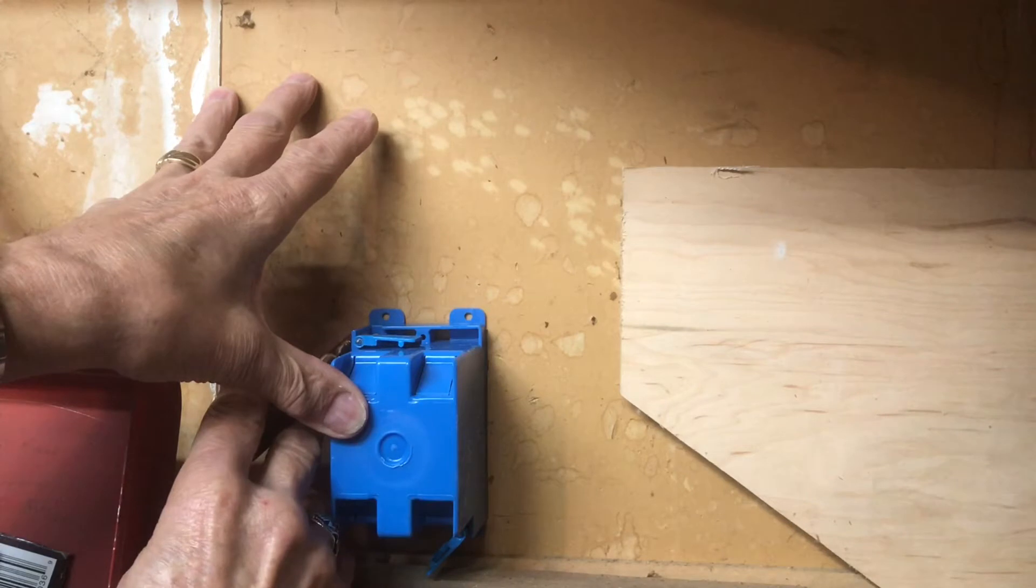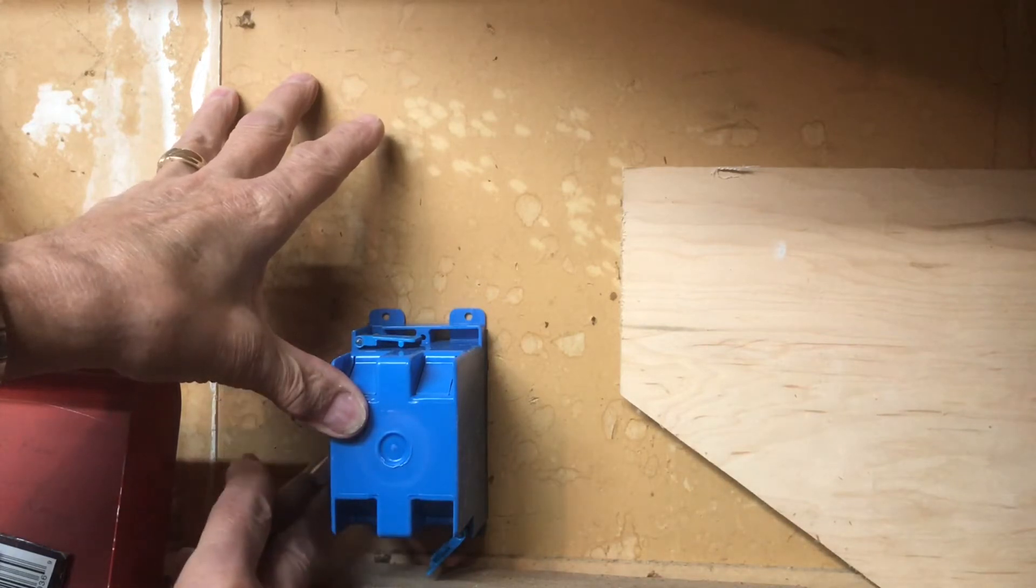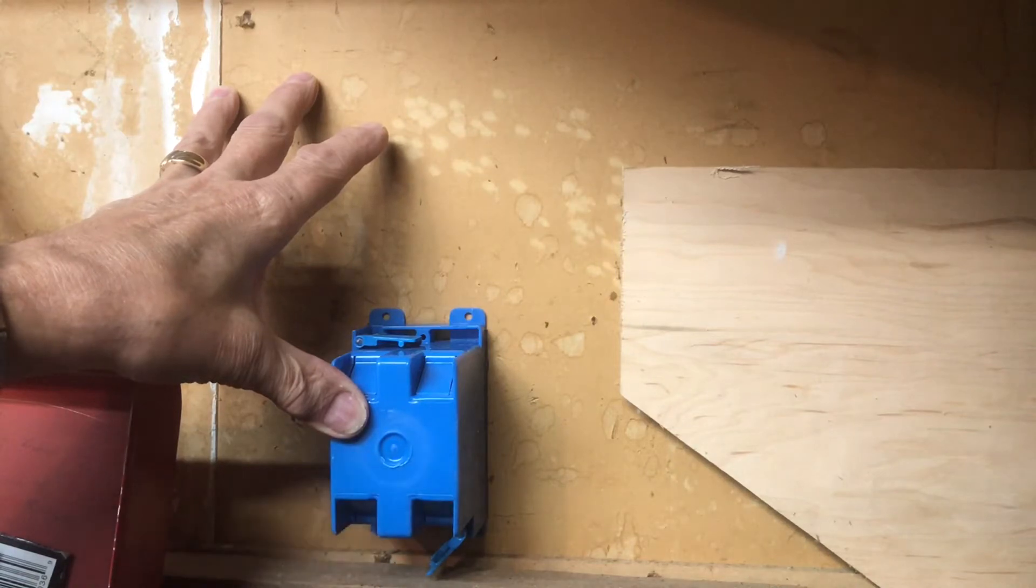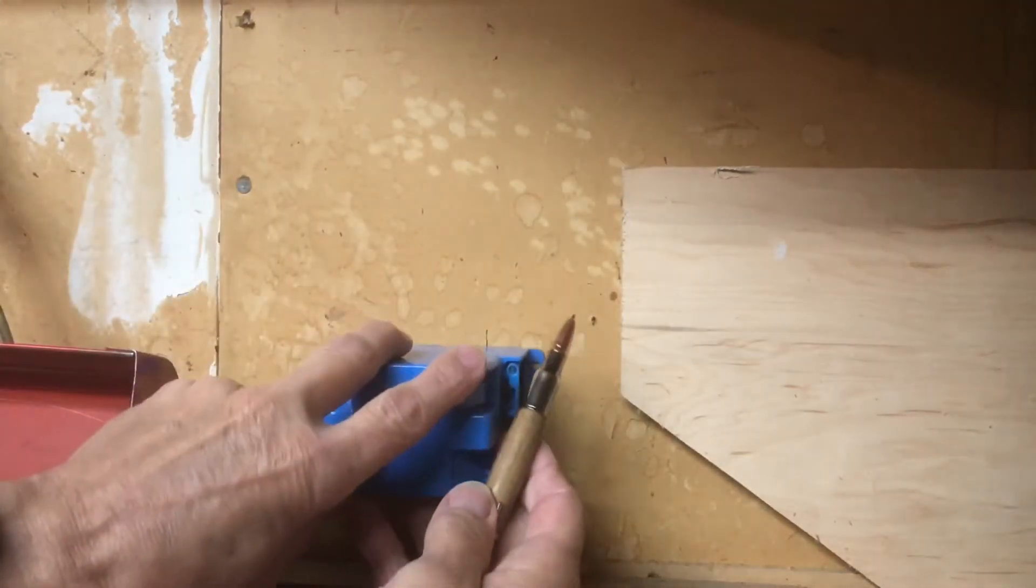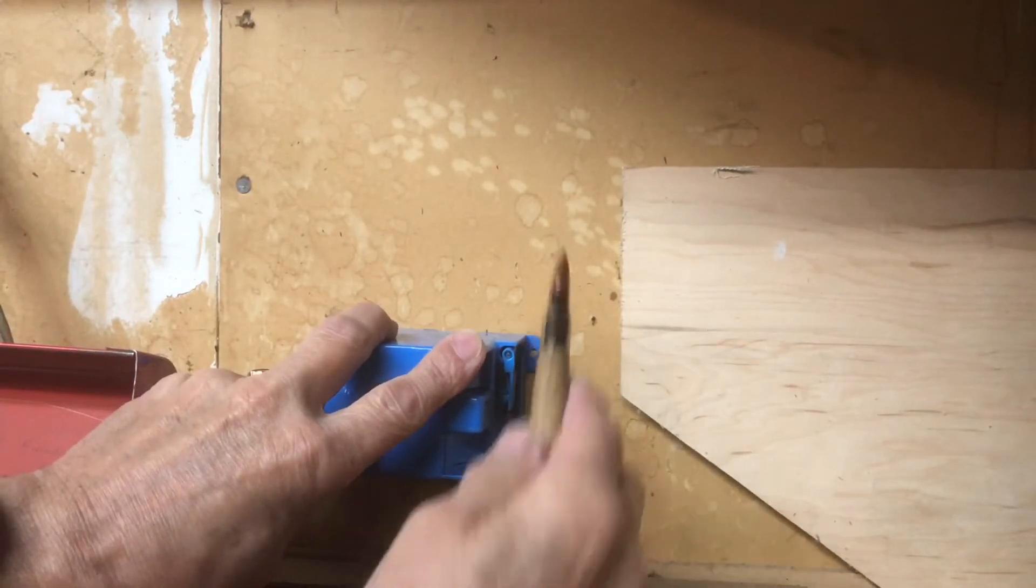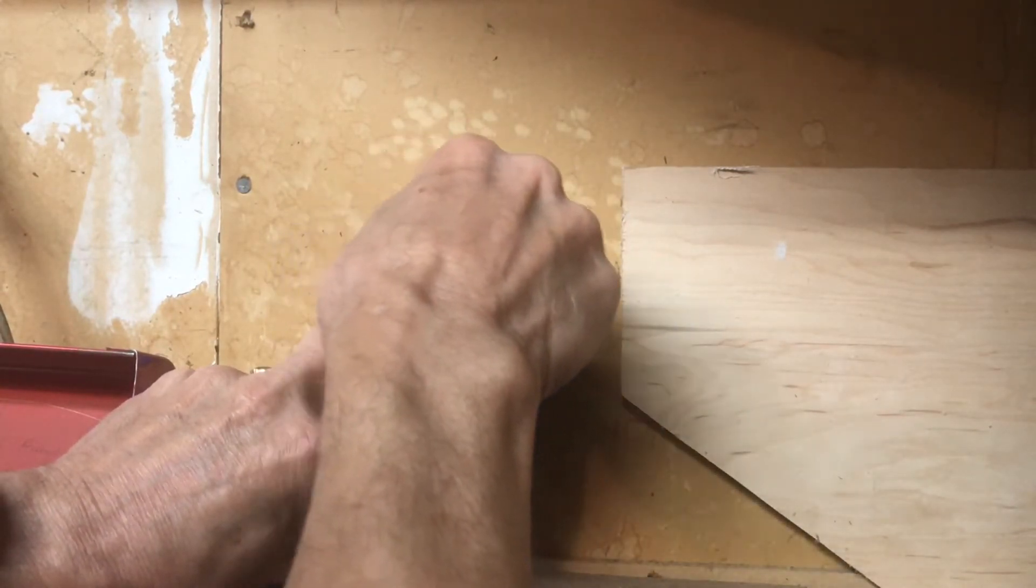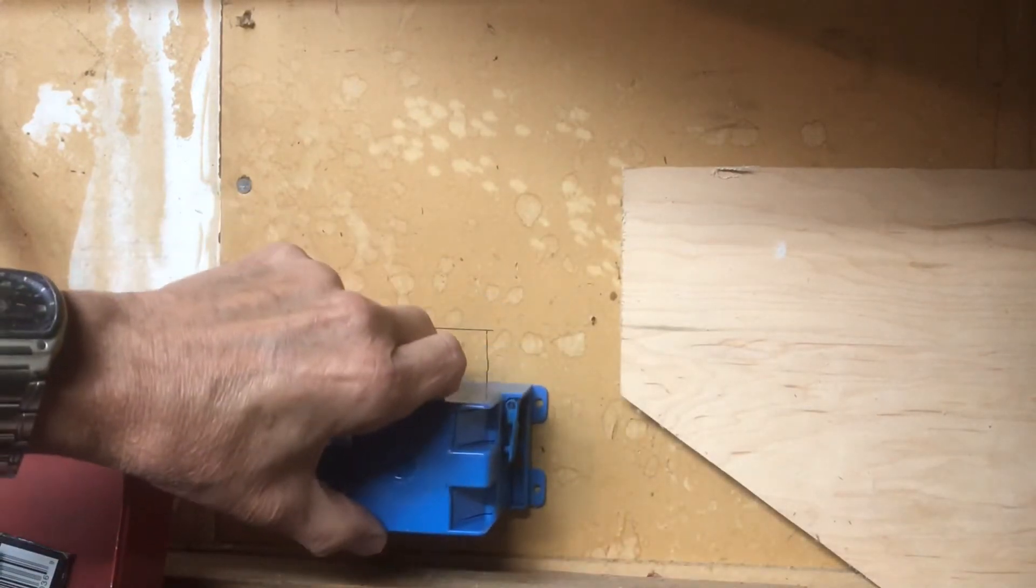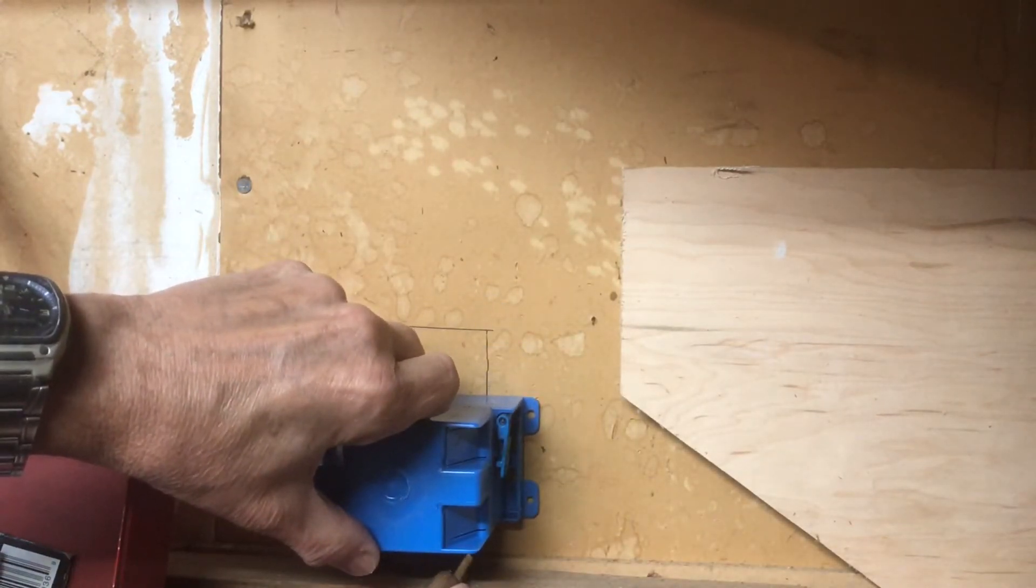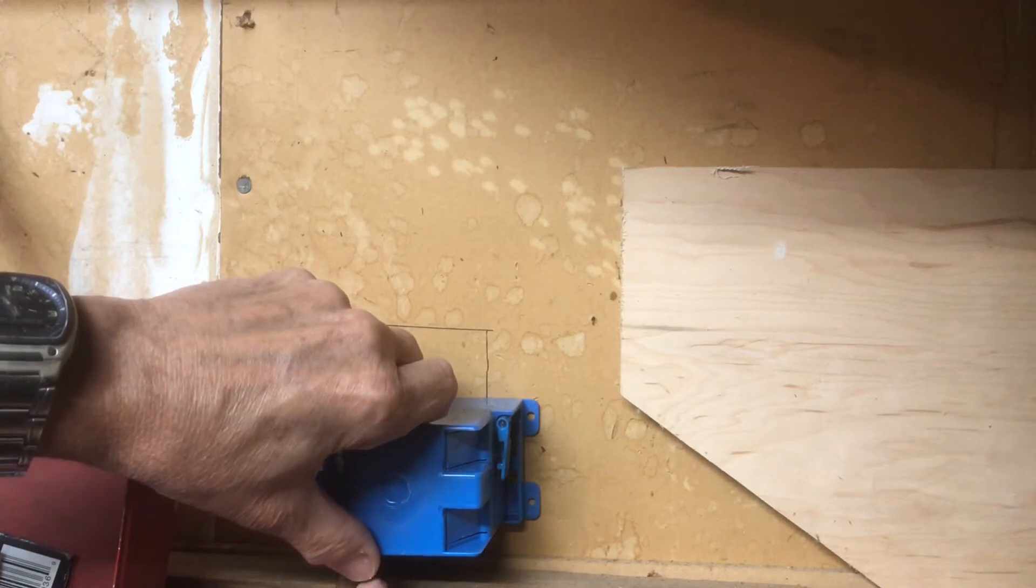You draw from the top all the way down, and then I usually just take the box and flip it and put it right at the edge of those marks and draw a line across. Do the same thing on the bottom side. That way I've got my outline on the wall of where I'm going to cut my hole.